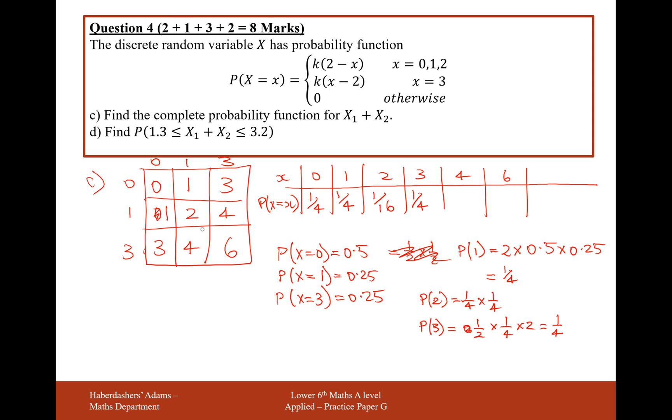The probability of rolling a 4, that can happen in two different ways. A 3 then a 1, or a 1 then a 3. So the probability of rolling a 4 is going to be 2 times the probability of rolling a 1, which is a quarter, times the probability of rolling a 3, which is also a quarter. So that will be 1 8th.